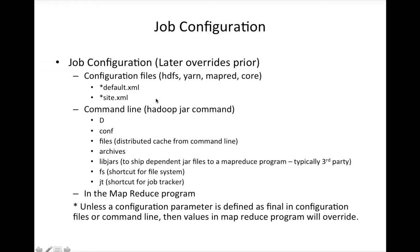The configurations set in the XML files sometimes need to be overridden. One perfect example is the number of reducers. The number of reducers by default is one in Apache Hadoop, the open source version. So when you submit a MapReduce job, regardless of the amount of data, it will only use one reducer, which can cause significant performance issues and out-of-memory issues. To address that, you have to change the number of reducers depending on your data size.